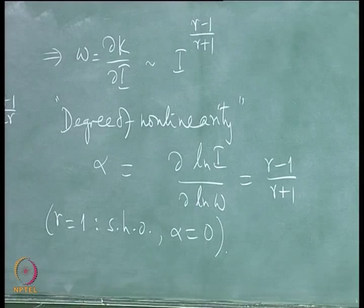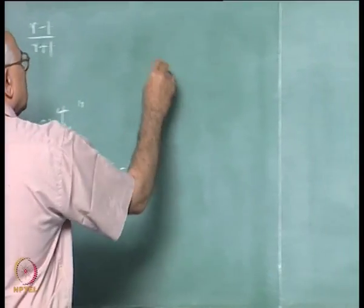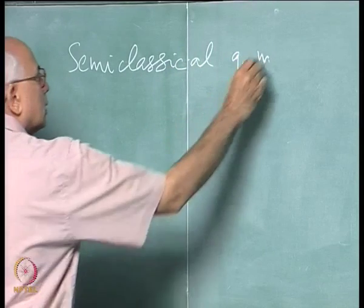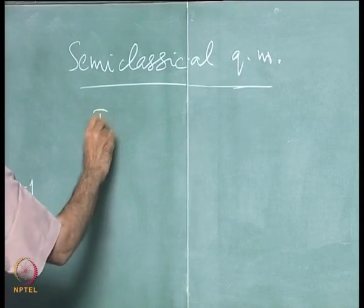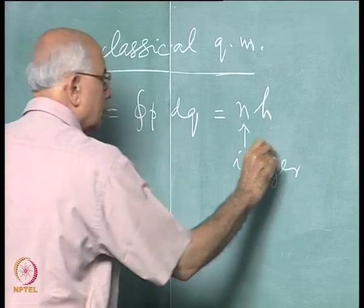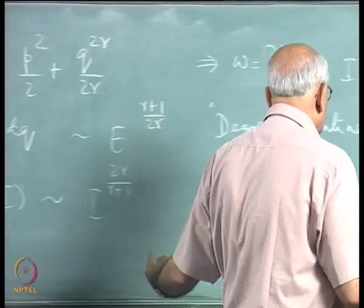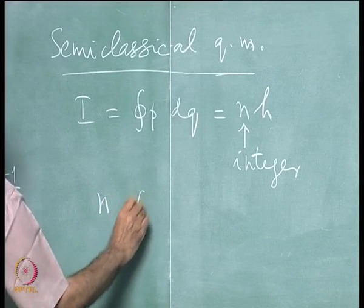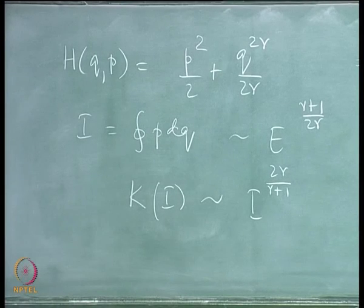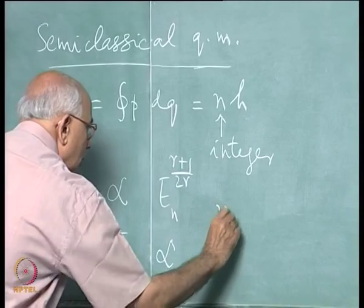We also saw that the semi-classical quantization of this system follows immediately. In semi-classical quantum mechanics, quantization corresponds to writing I, the integral of p dq, equal to n times Planck's constant, where n is an integer. Taking that together with the action-energy relation at once implies that n is proportional to the energy level E_n to the power (r+1)/2r, or equivalently E_n is proportional to n to the power 2r/(r+1).